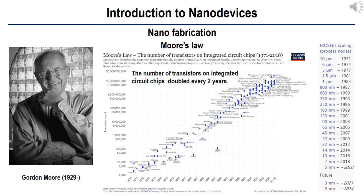Moore's Law is the observation that the number of transistors in a dense integrated circuit doubles about every two years. The observation is named after Gordon Moore, co-founder of Fairchild Semiconductor and former CEO of Intel. Moore's prediction proved accurate for several decades and has been used in the semiconductor industry to guide long-term planning and set targets for research and development. Advancements in digital electronics are strongly linked to Moore's Law, including microprocessor prices, memory capacity such as RAM and flash, sensors, and even the number and size of pixels in digital cameras. Moore's Law describes a driving force of technological and social change, productivity, and economic growth.